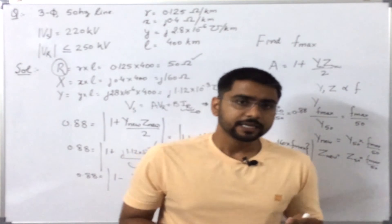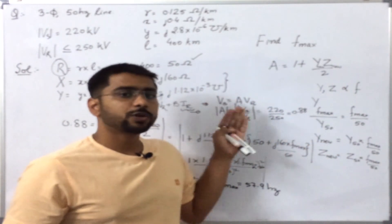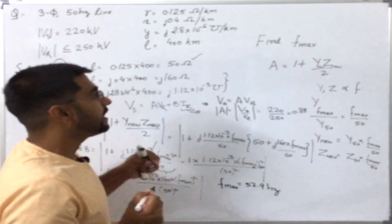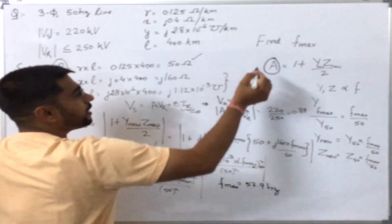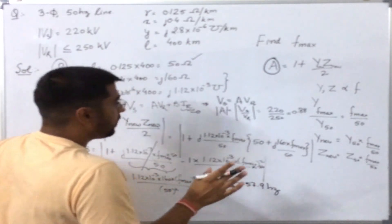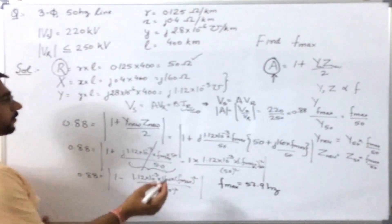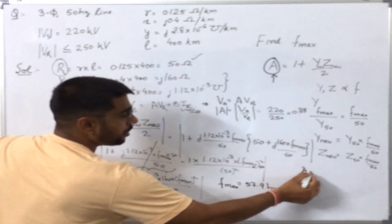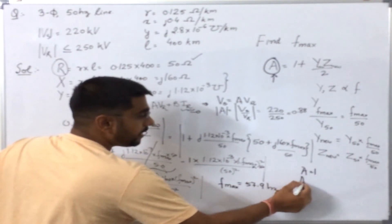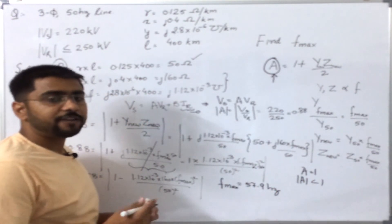So here we have seen that the transmission line also has a maximum limit for the frequency of operation. We have also seen that the value of A can either be equal to or less than 1 only, because it also shows that there will be a Ferranti effect on the line. So for short line, A equals 1, and for medium length line or long lines, A is usually less than 1 to show the effect of Ferranti effect.